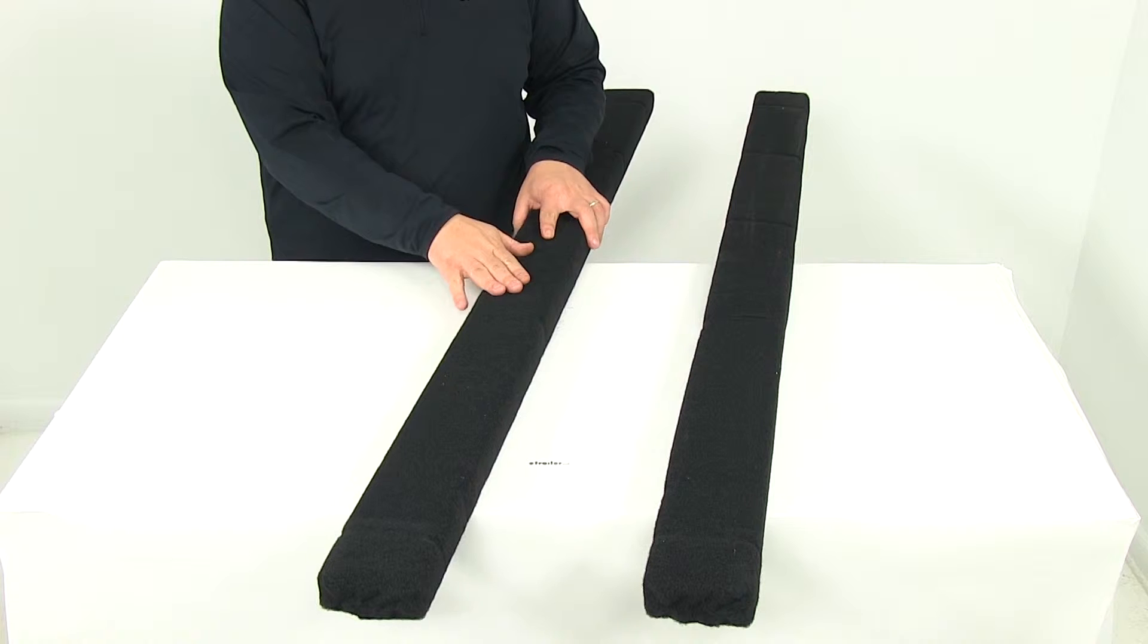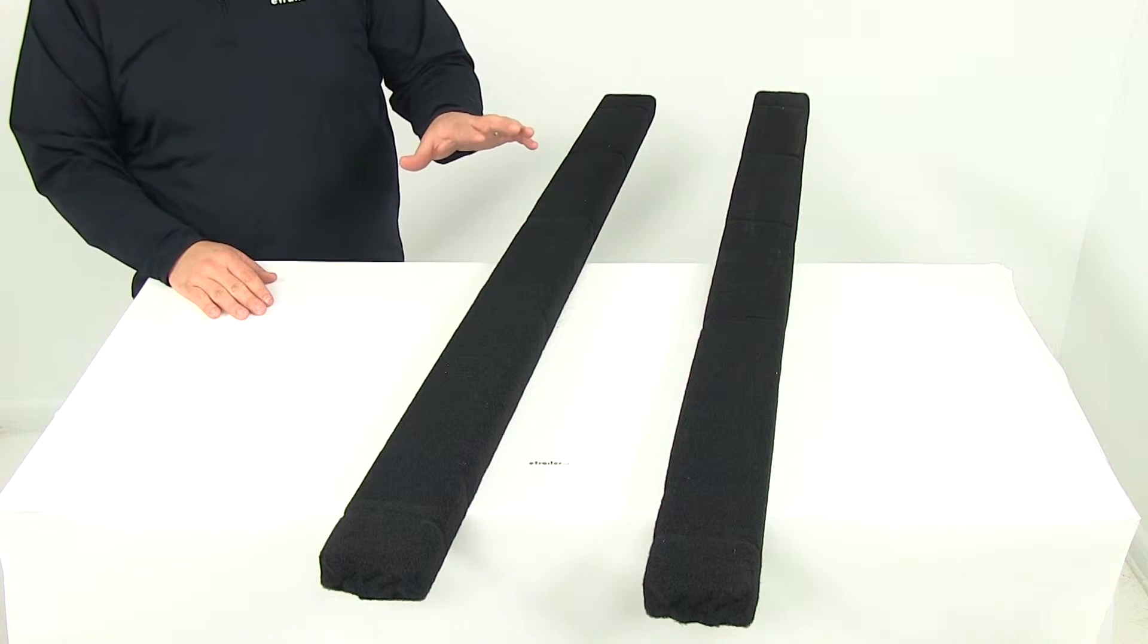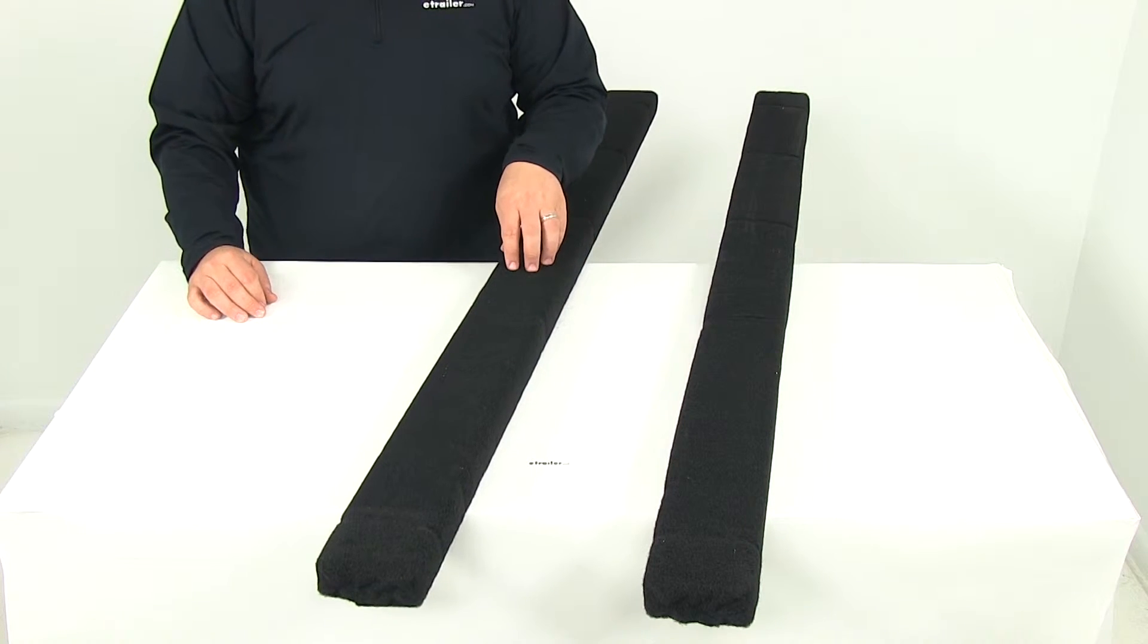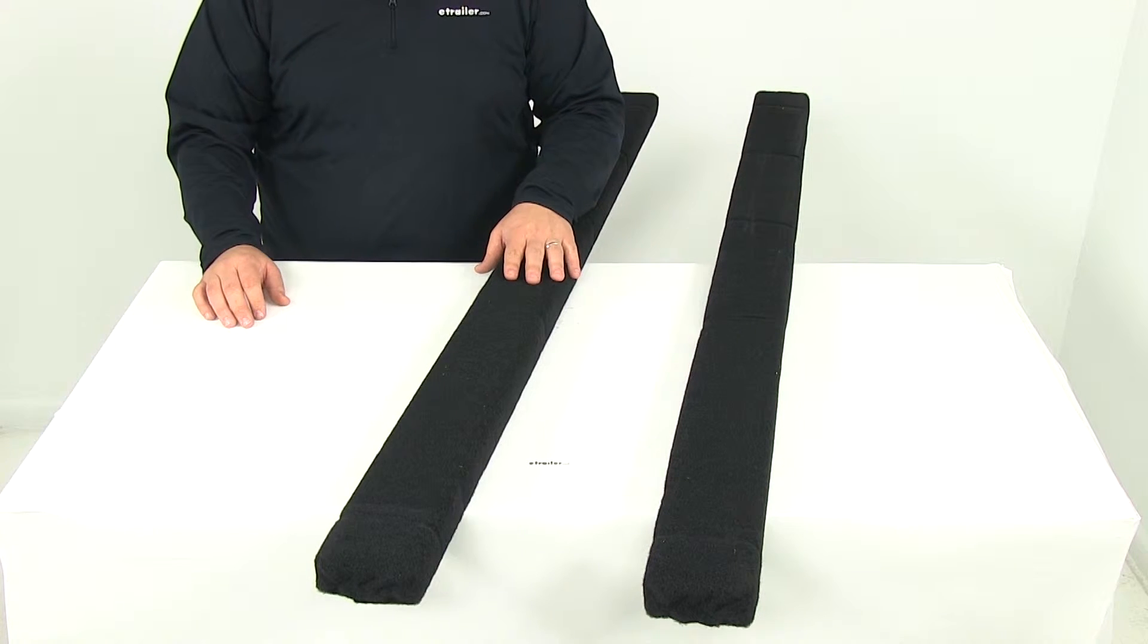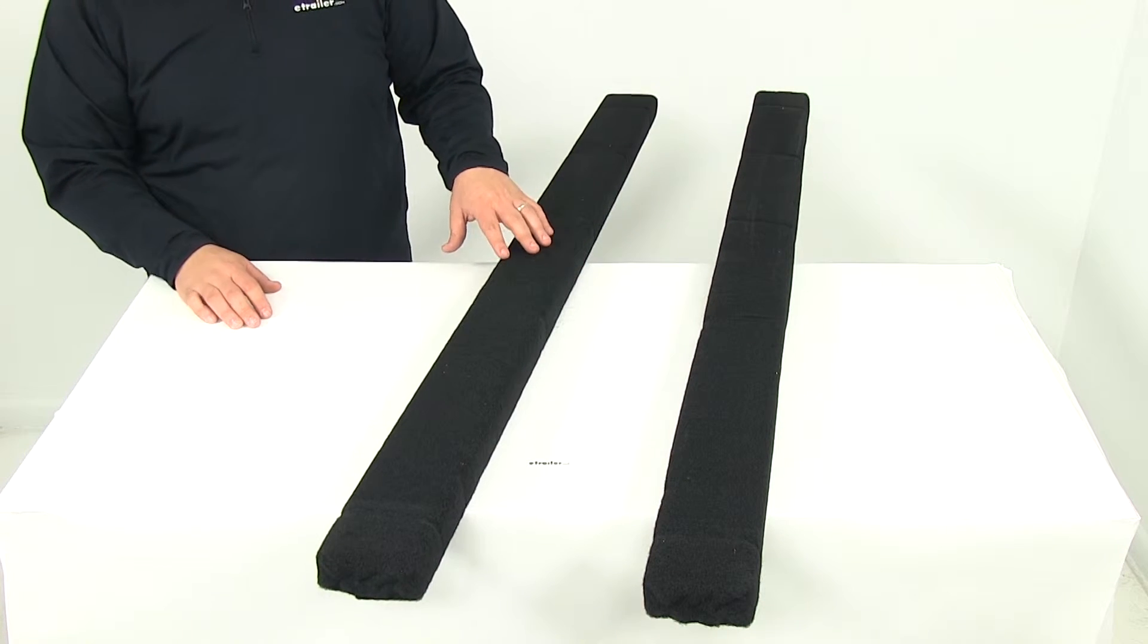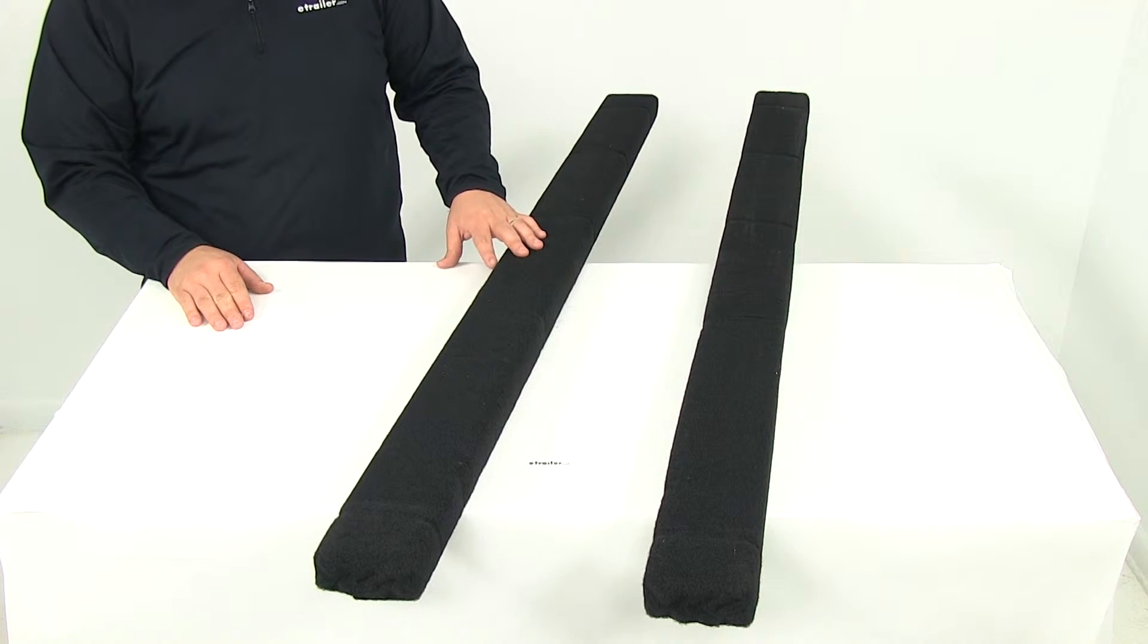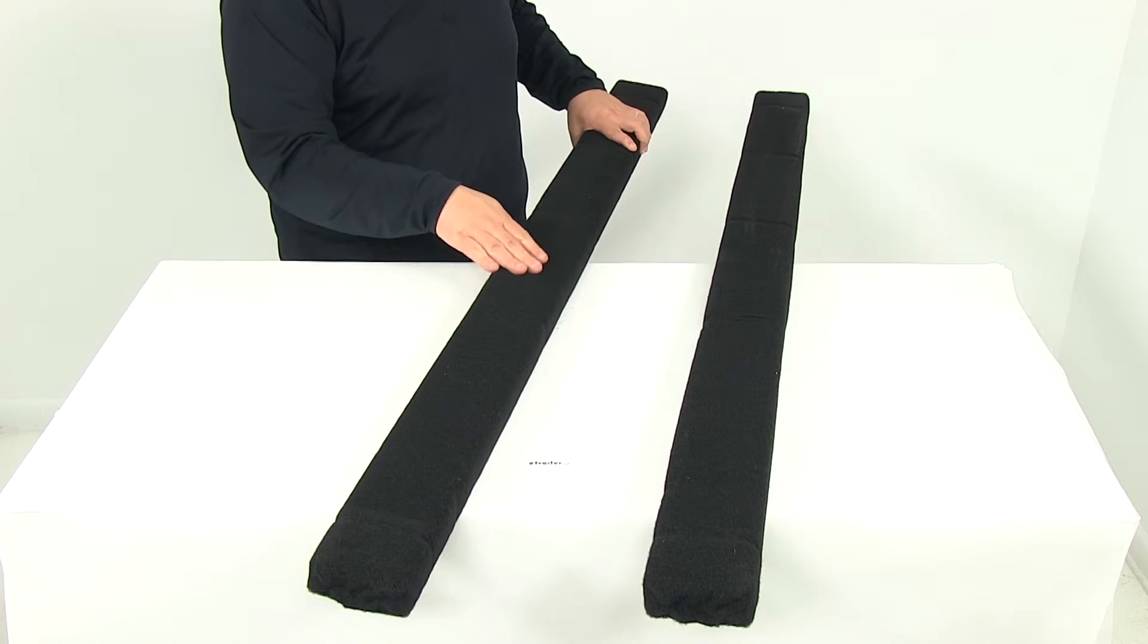The bunk boards are going to install easily in either two different ways. You can either use the existing brackets on your trailer frame, or you can attach to the trailer frame using swivel brackets. Those are going to be sold separately. We offer them here at eTrailer.com. That's going to allow for height and angle adjustment. So those are great brackets to have if you don't already have a set.